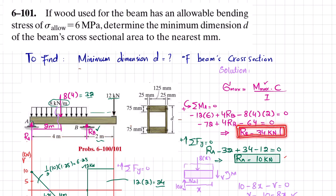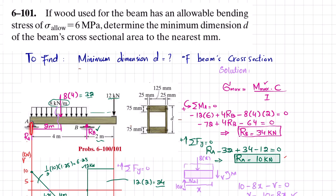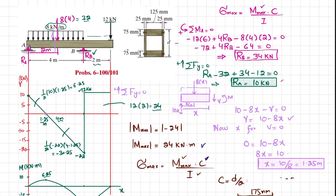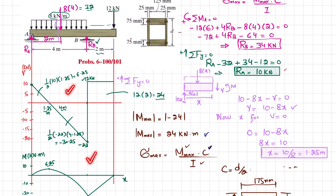Solving the moment equation gives Rb = 34 kilonewtons. For the sum of all forces in the y-direction equal to zero: Ra minus 32 (distributed load, downward) plus Rb of 34 (upward) minus 12 (downward) equals zero, giving Ra = 10 kilonewtons. Wait — solving correctly yields Ra = 40 kilonewtons.